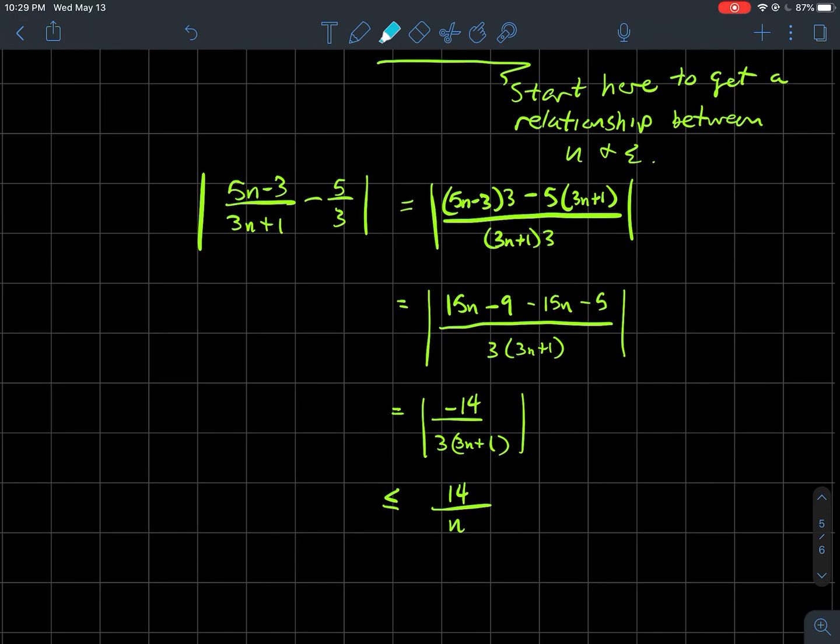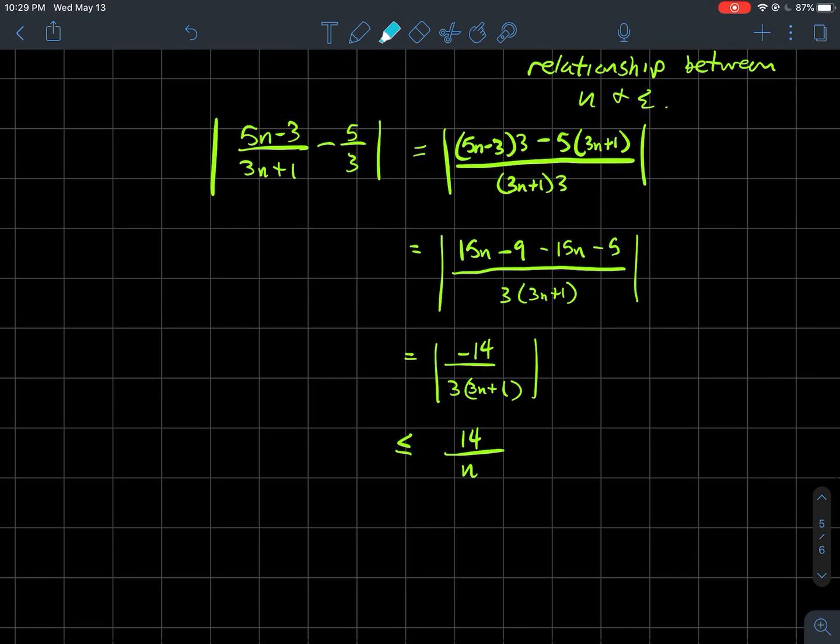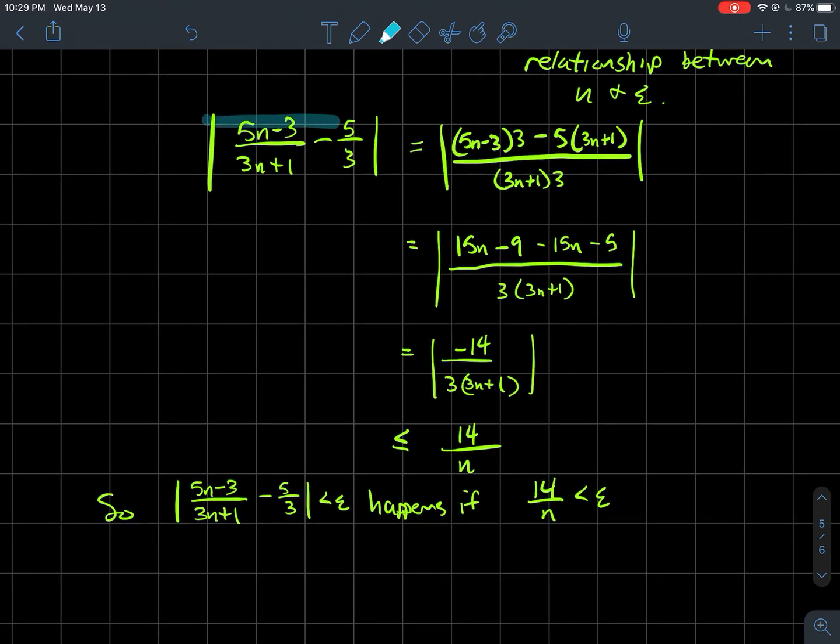Making those kinds of jumps is very important in this class. Why is that good? I wanted this to be less than epsilon for some n. I get that if I can make 14/n less than epsilon.